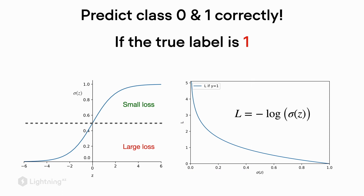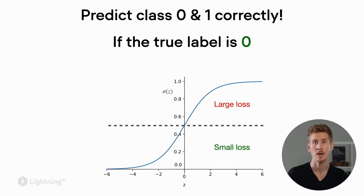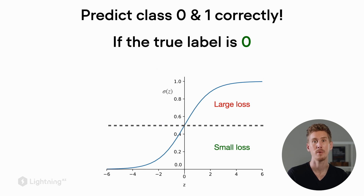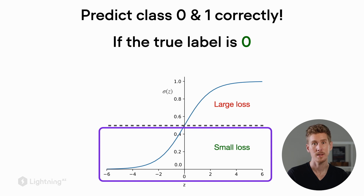The mathematical formula for this loss is the negative logarithm of the activation when the class label is 1. Now for the other case where the true class label is 0: the activation value represents the class membership probability for class label 1. So we actually have a bad prediction if the activation is greater than 0.5, because that means we would return class label 1. In this case, we flip the loss — large activation values produce a large loss, and small activation values produce a small loss.